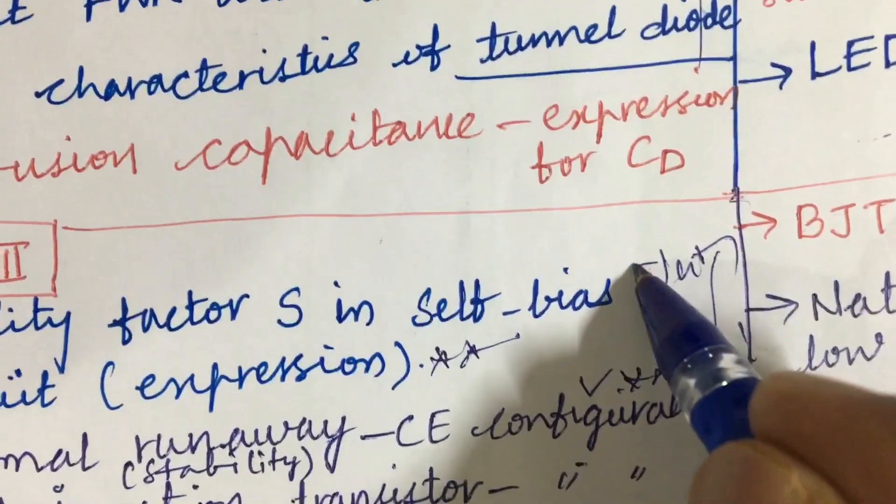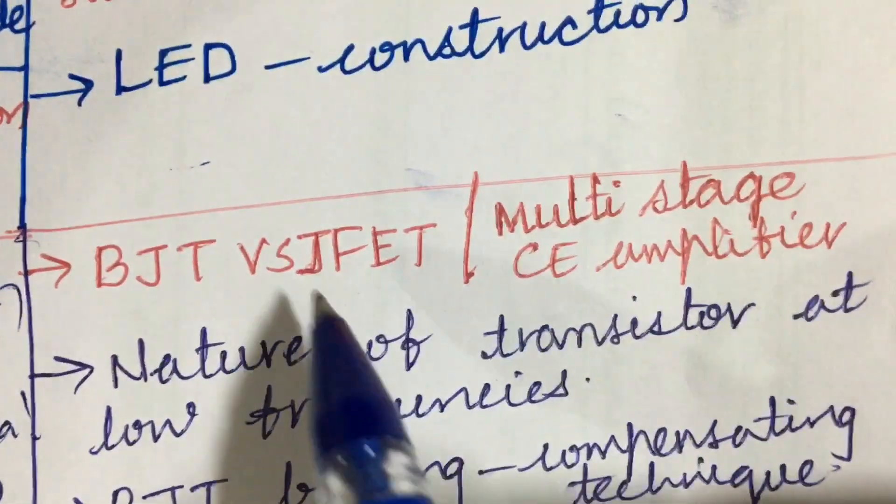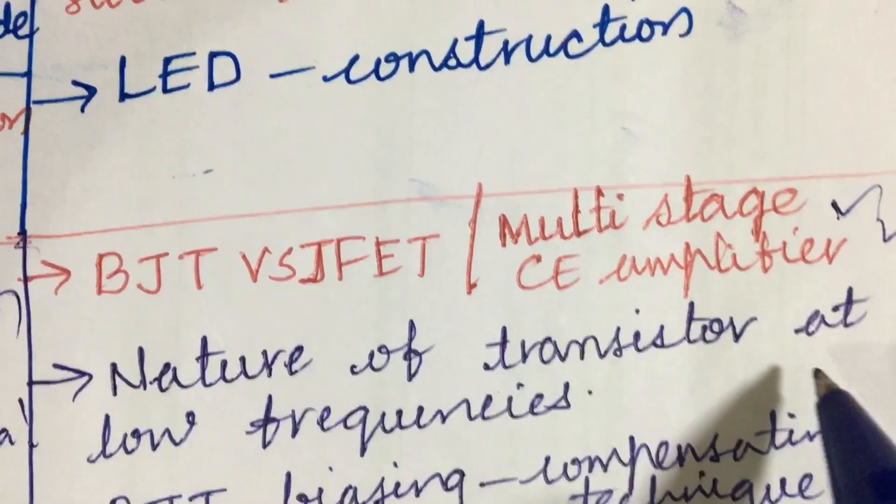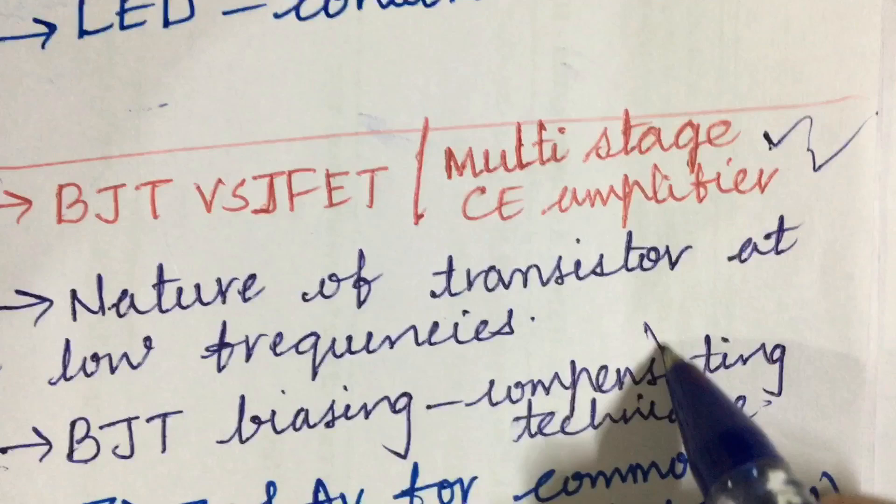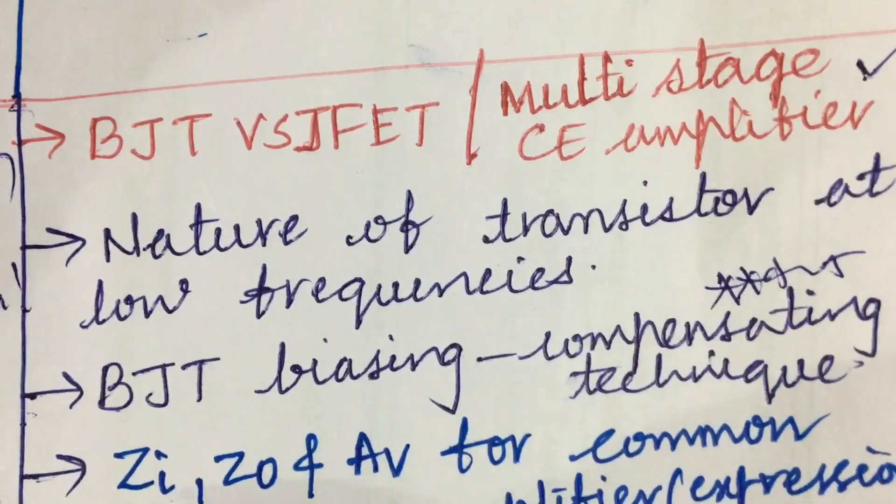Later, the difference between BJT versus JFET and the multi-stage CE amplifier and the nature of transistor as a low frequency. BZ biasing compensating technique is said to be one of the gunshot questions. Later the expression for ZI, ZO, and AV for a common drain JFET may be also one of the very important questions.